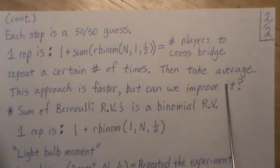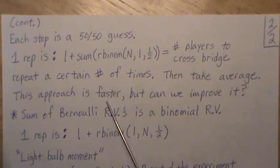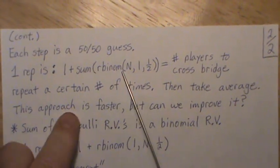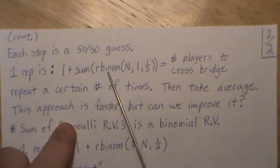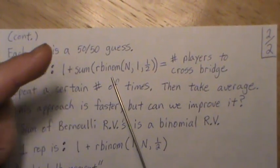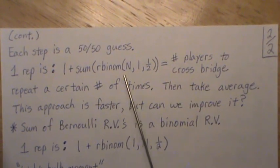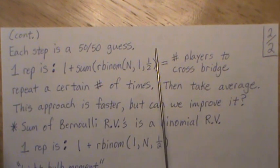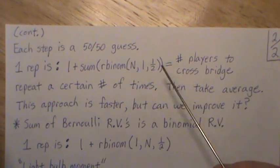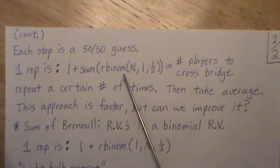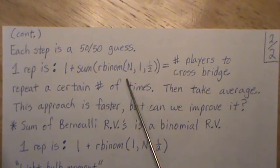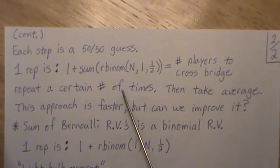Since each step is a 50/50 guess, we could simulate one glass bridge game by randomly generating ones and zeros at a 50/50 rate, then sum the ones and add one. One replication is: 1 plus the sum of n Bernoulli random variables with size 1 and probability one-half. We could loop over this and take the average, but there's a faster approach: instead of a loop, create a matrix of size reps by n, sum each row, add one, and take the mean.